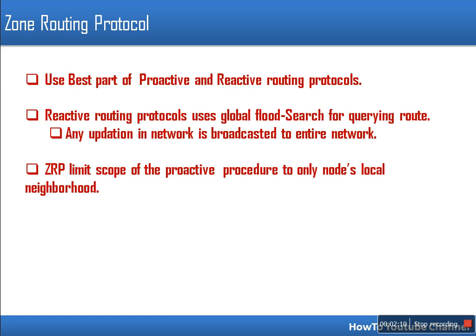Zone Routing Protocol uses the best parts of proactive and reactive routing. Instead of using flood search for querying routes — as reactive routing protocols do, where they broadcast a route query packet to every node in the network — ZRP does not broadcast across the entire network. The proactive routing protocol is only used in the local neighborhood, because any change in the network will affect only the neighborhood, not the other end of the network.